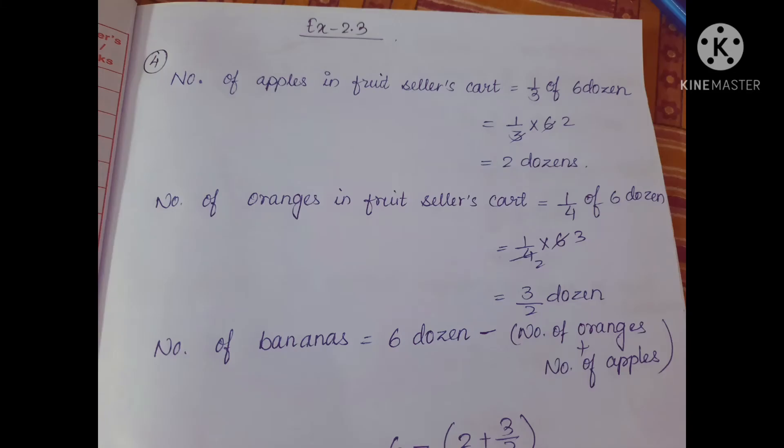The number of apples in the fruit seller's cart is equal to 1 by 3 of 6 dozen. After solving, I am getting 2 dozens. Next, the number of oranges in the fruit seller's cart is 1 by 4 of 6 dozen. After solving, I am getting 3 by 2 dozen.